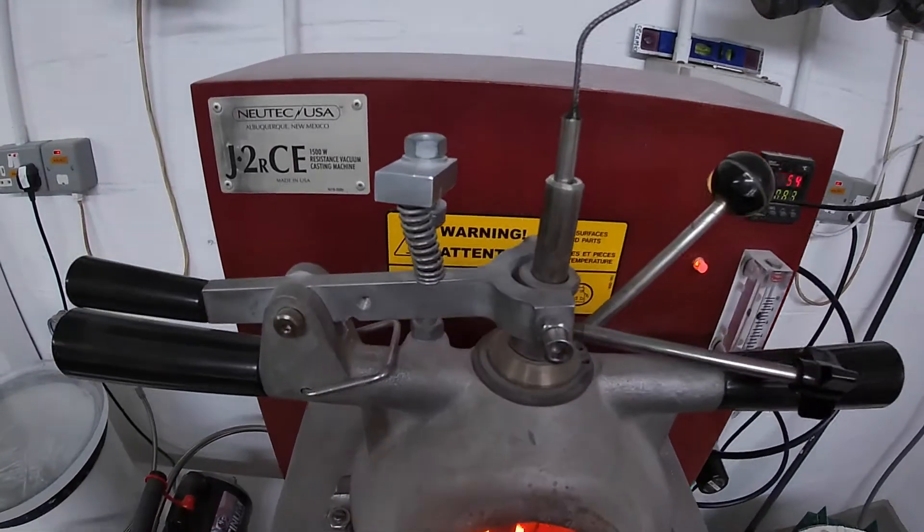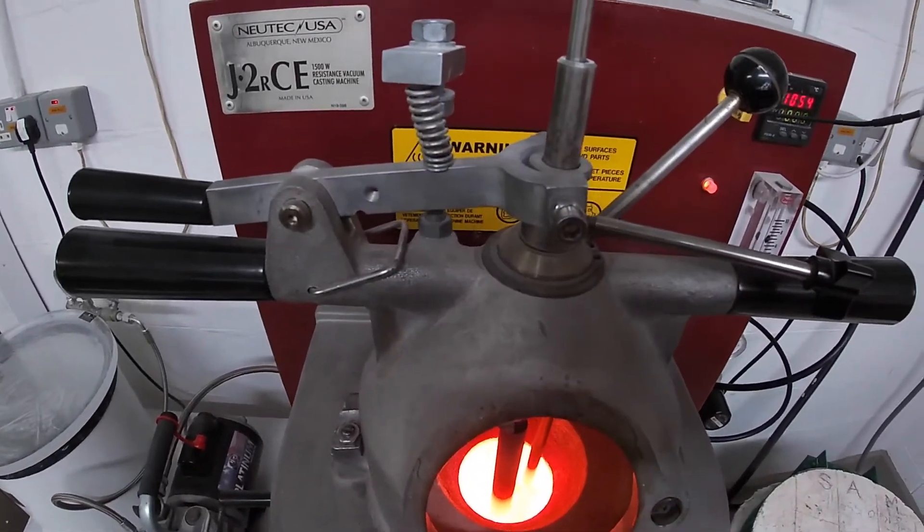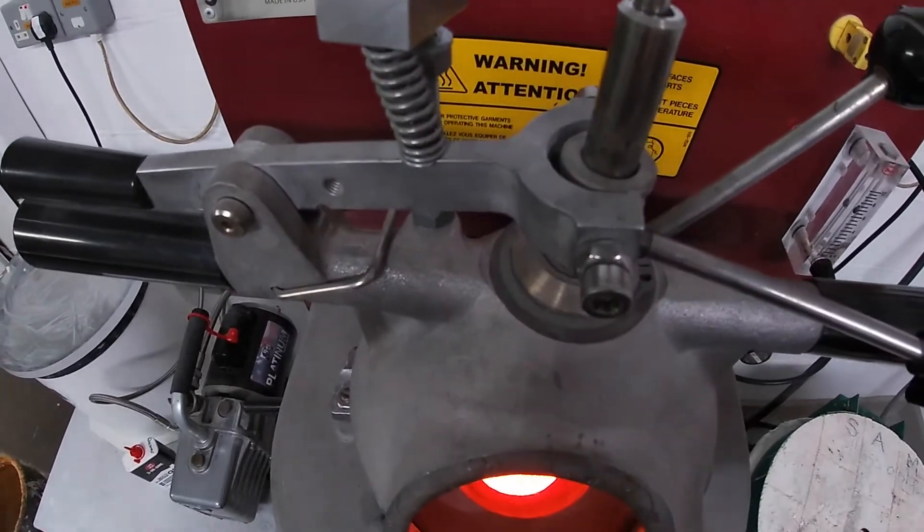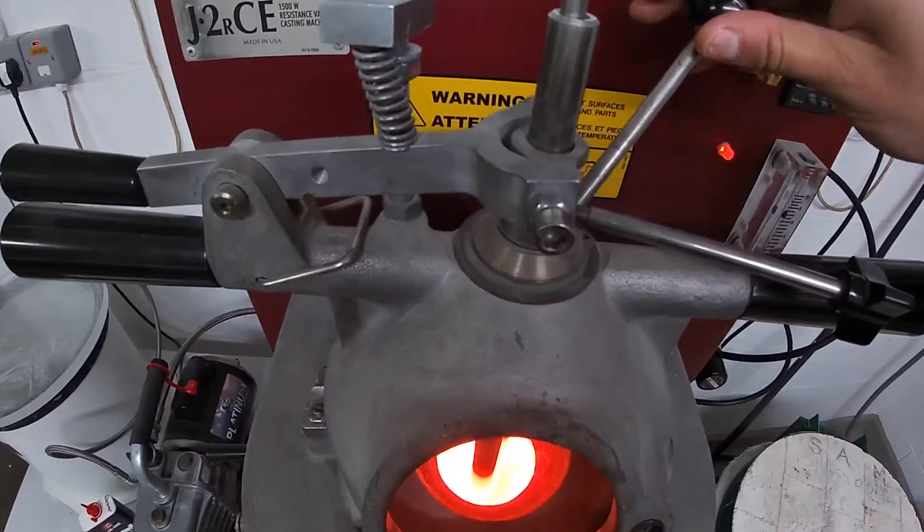In addition, the vacuum created where the investment flask sits will help pull the molten metal to all parts of the model.